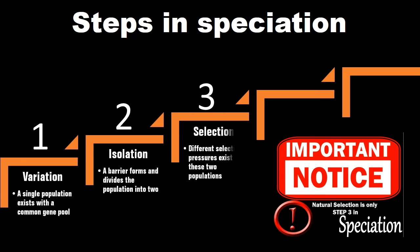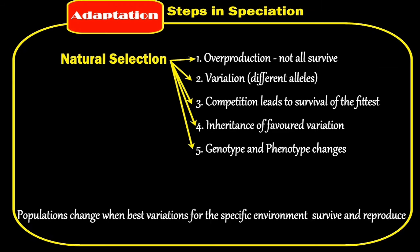Within natural selection, there are a few steps that commonly take place. The first is that there is usually an overproduction and not all individuals will survive. There are variations — two or three different alleles. Competition leads to the survival of the fittest. The inheritance of the favored variation leads to genotype and phenotype changes within the larger population, changing when the best variation for the specific environment survives and leads to reproduction.